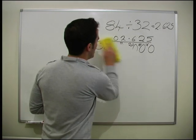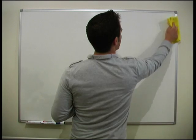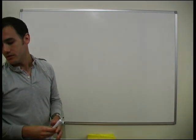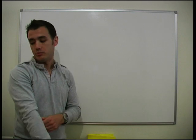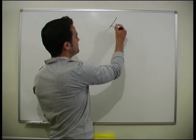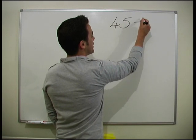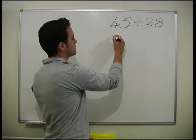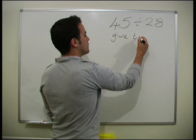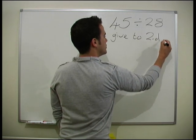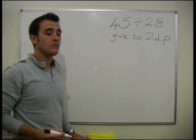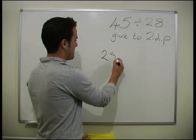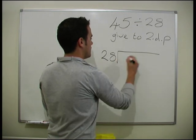We'll do one more example where we're given a number that gives us a decimal that will go on forever. We don't want to do a decimal that goes on forever, so what we'll do is we'll do it to two decimal places. We're going to do 45 divided by 28, and we're told to give the answer to two decimal places. So, the number of 28s to go into 45 — we've got 28 going into 45.